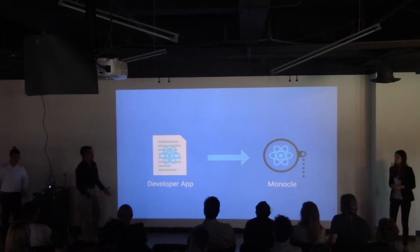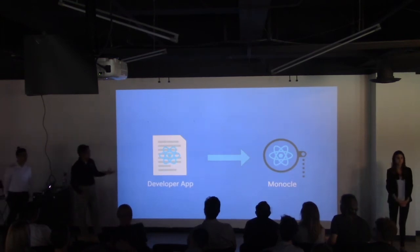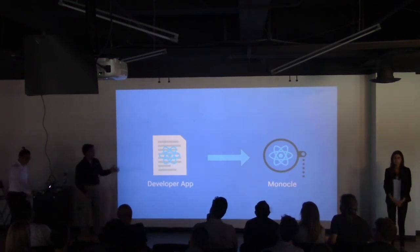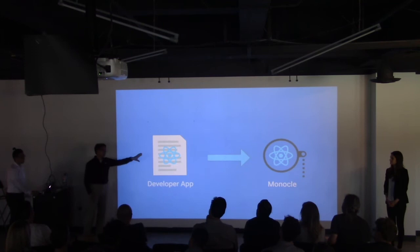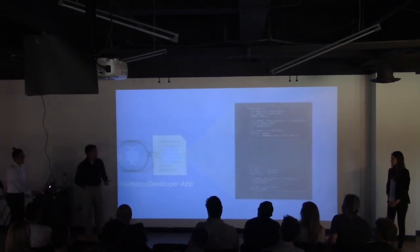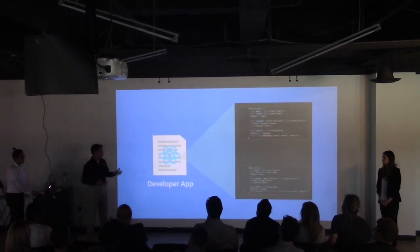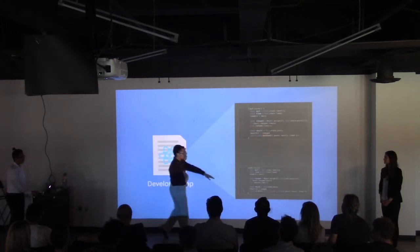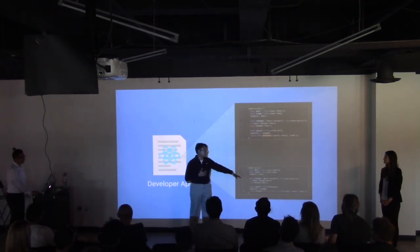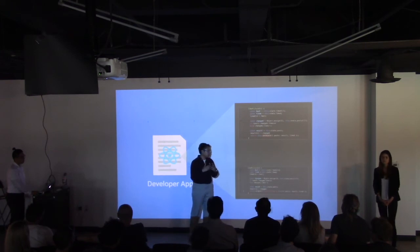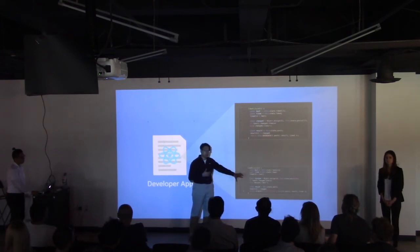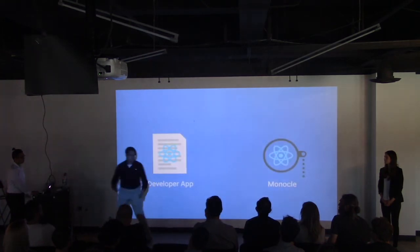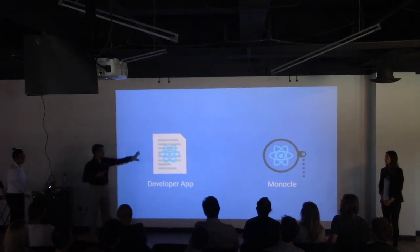As you saw from our demo, a key feature of our application is being able to synchronize the live state changes from the developer's app to Monocle. In order to do this, we needed to be able to harness the state changes the developer was making. We implemented wrapper functions inside each of their React components, which would then intercept the state changes as they were interacting with the components.